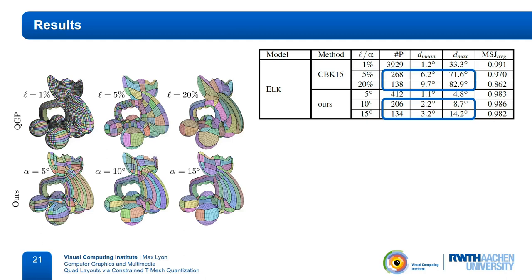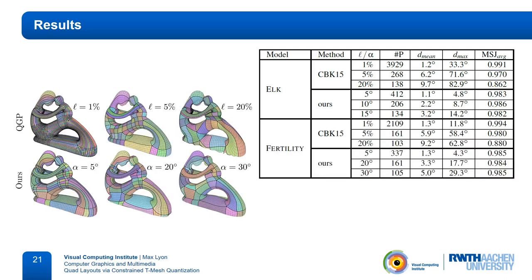The quality of the individual elements, as indicated by the average minimum scaled Jacobian, is a bit better with QGP for the densest layout, but this comes at the cost of almost 10 times as many layout patches. In the other versions, our element quality is higher. The same general behavior can be observed on the fertility model, as well as on the bunny.